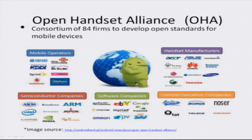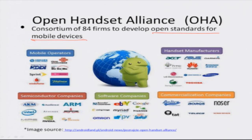A little bit about Android history. The Open Handset Alliance was founded in 2007 with 47 companies; currently this consortium has 84 companies. The goal is to develop open standards for mobile devices. By open standards we mean developing a common operating system that can support all these varying device capabilities.